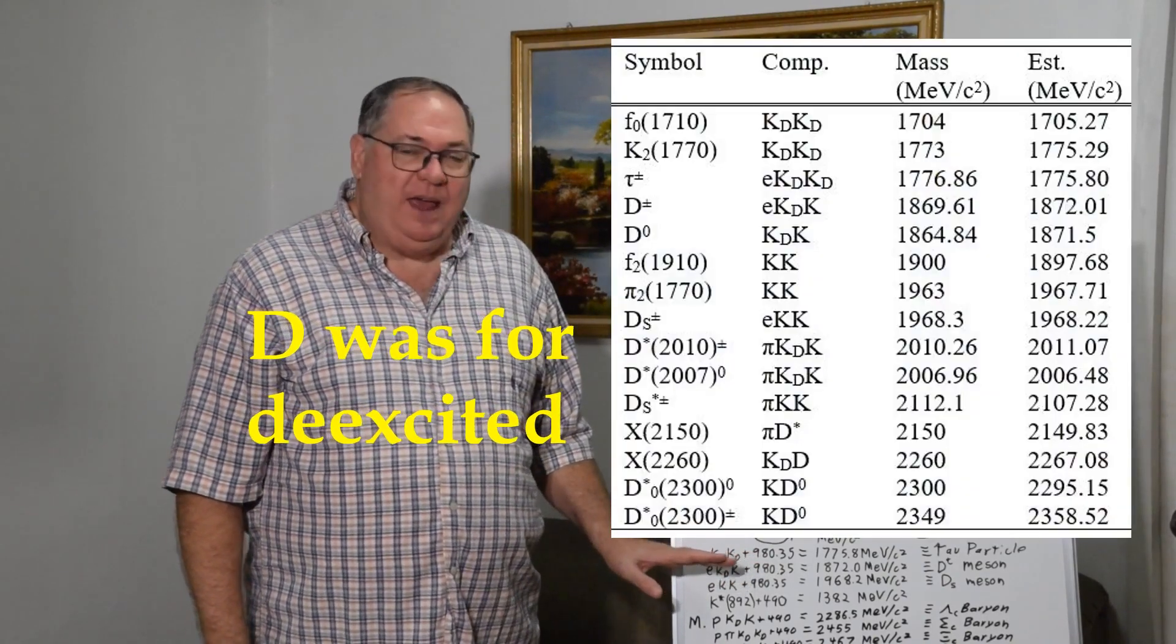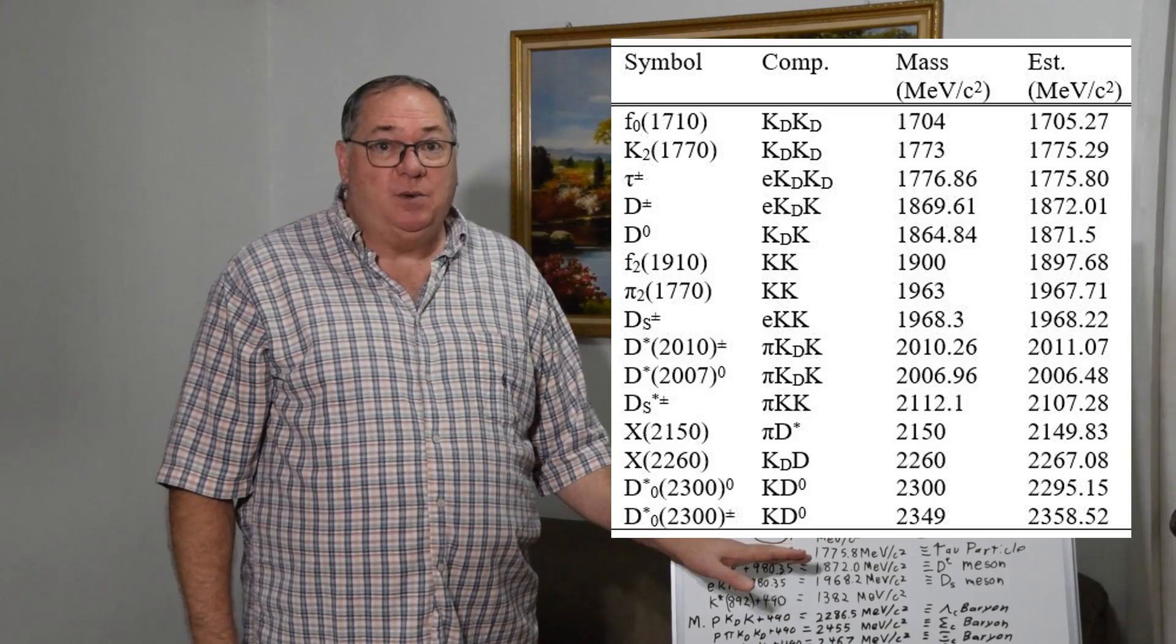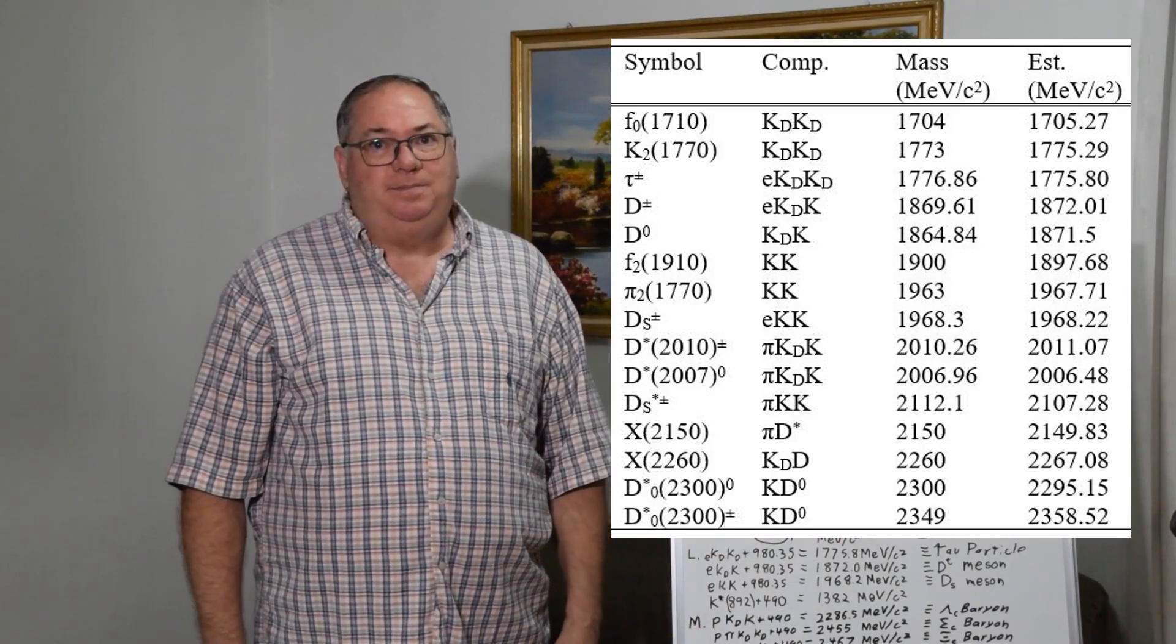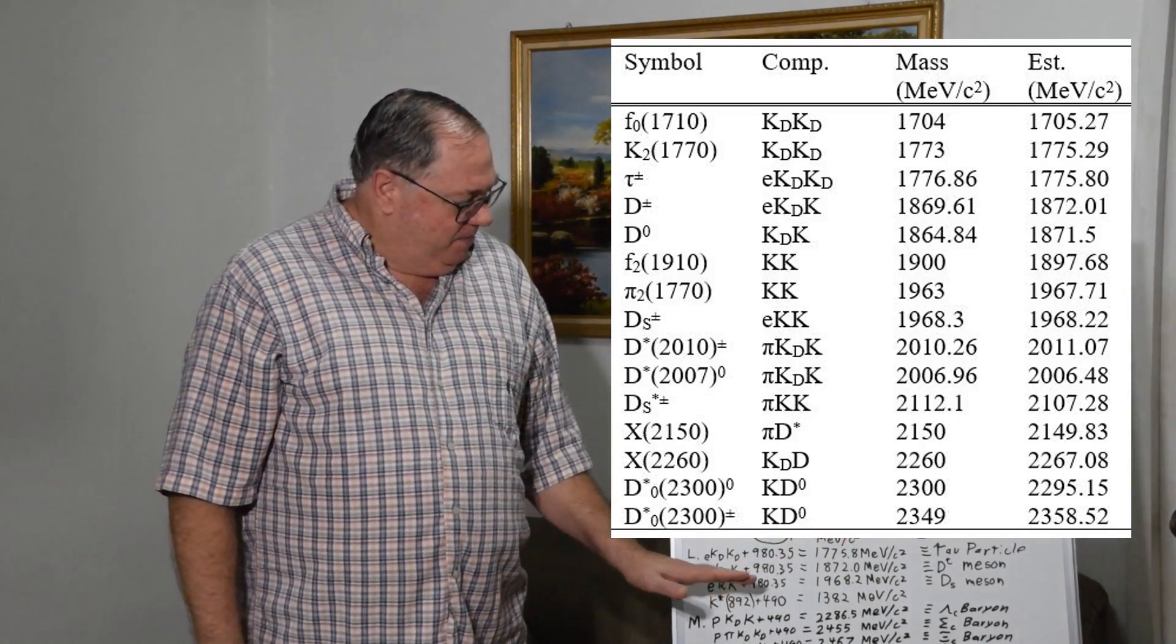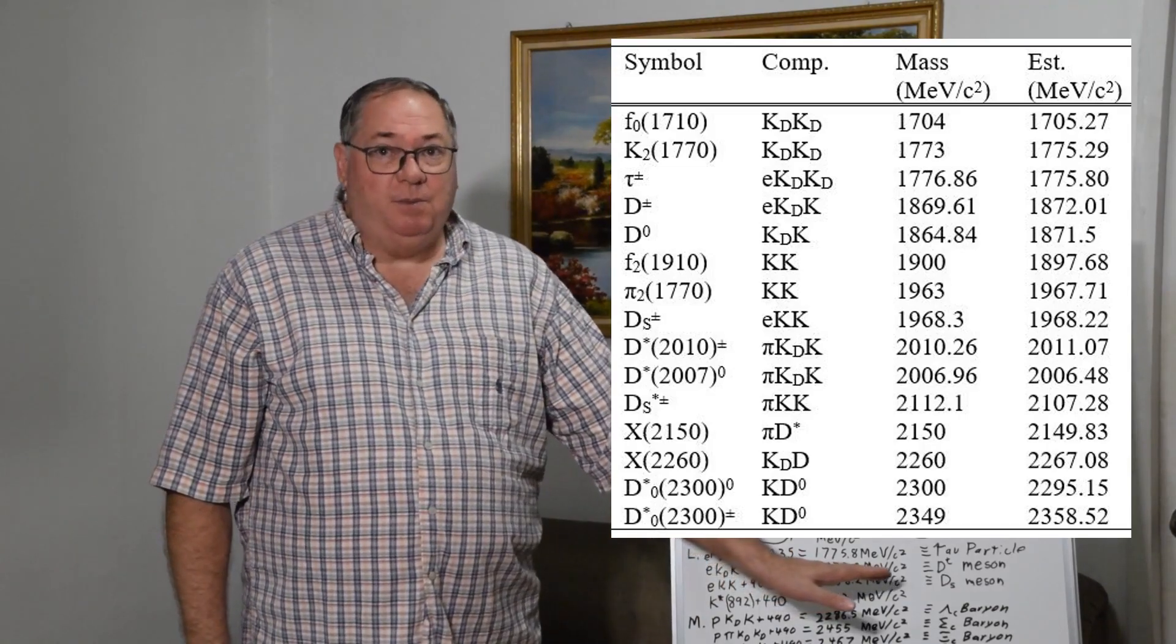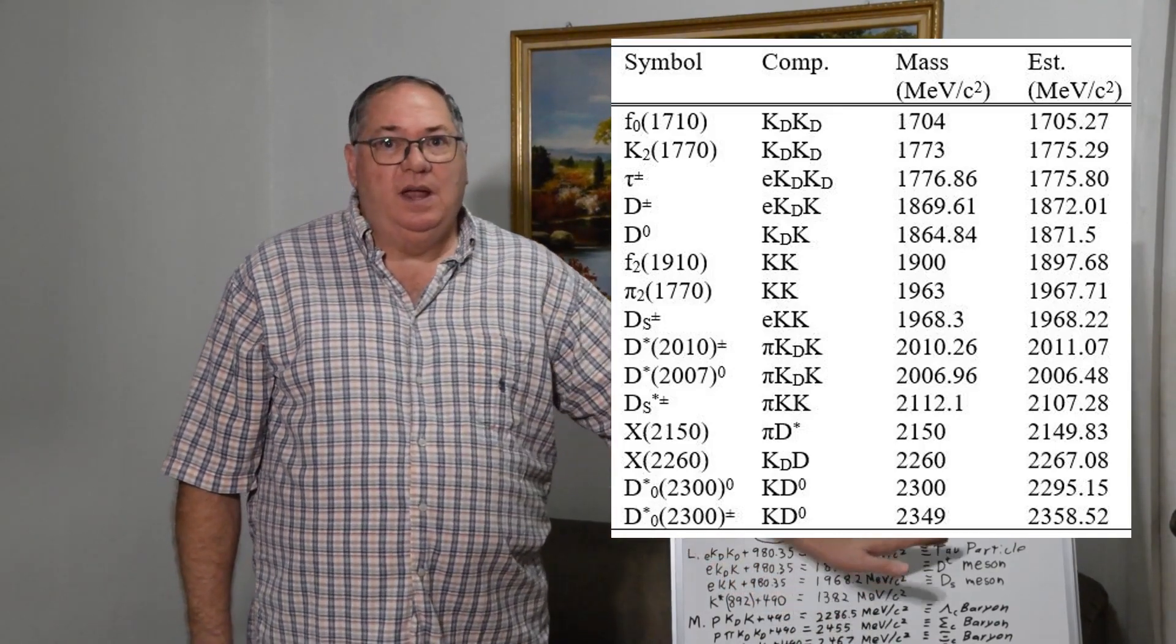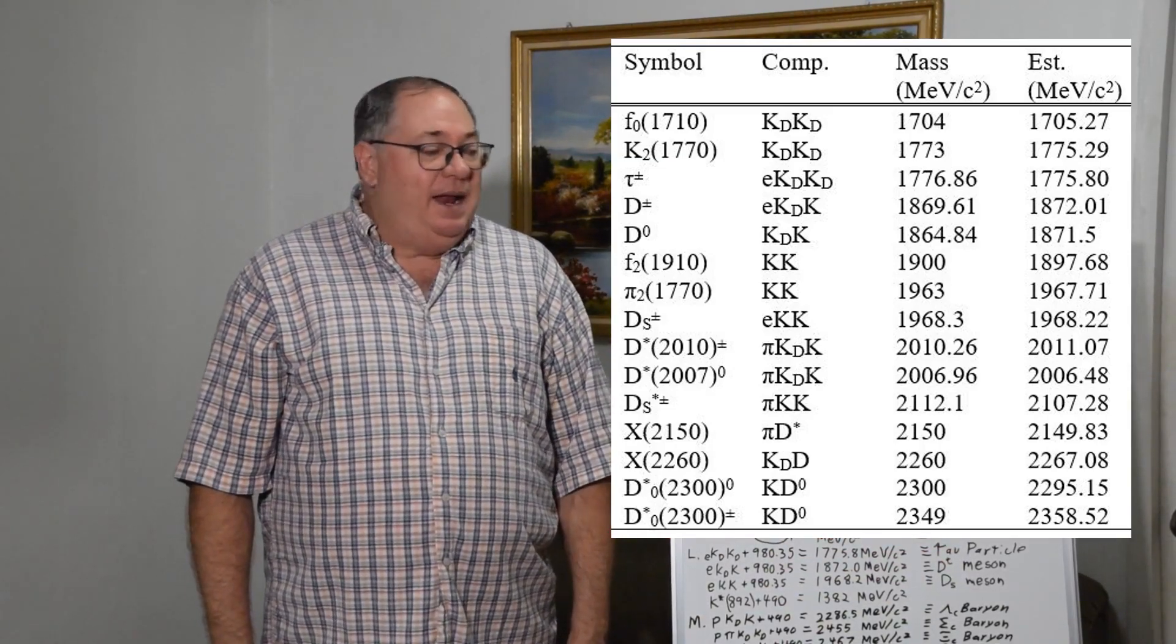And so if you have an electron, two kd kaons and the 980.35 MeV/c² higher energy orbit, you have 1775.8 MeV/c², which is the mass of the tau particle. And I did another video on how the tau particle is not elementary because it's a pair of kaons. And then if you take an electron, a kd and a k, it's slightly more massive, 1872.0, which is your regular D meson. And if you take an e and two k's, then you get a mass of 1968.2, which is almost exactly the measured mass of the strange D meson. And that's exactly what it decays to.